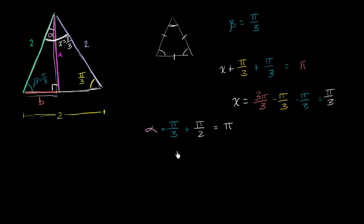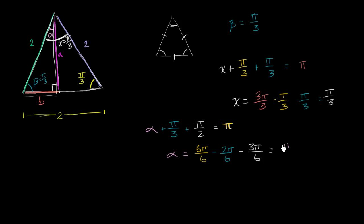So alpha equals pi minus pi over three minus pi over two. Using a common denominator of six: six pi over six minus two pi over six minus three pi over six equals pi over six. So alpha is equal to pi over six radians.